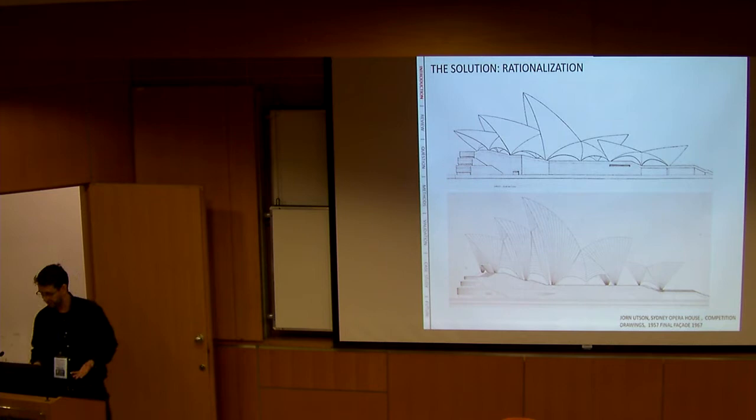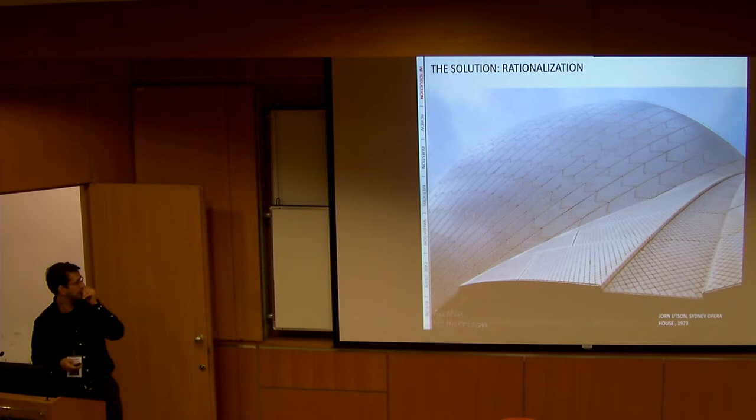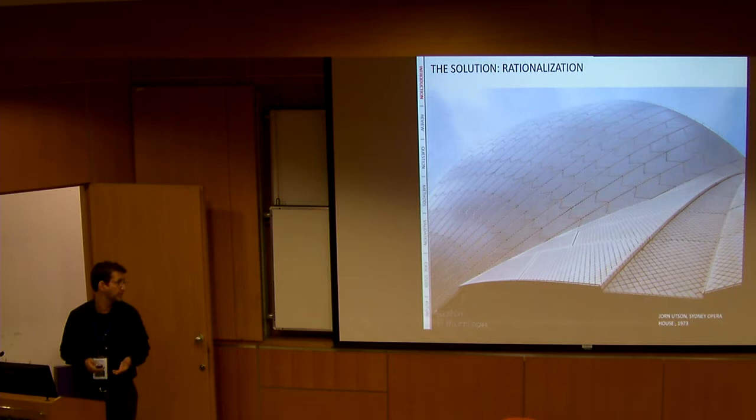So this is called rationalization. And here you can see the spheres kind of segmented. And this is also actually one of the first uses of computation in architecture. Because these things were actually printed on paper, laid out on the aluminum, traced and then cut.